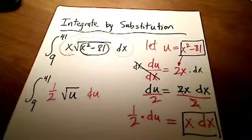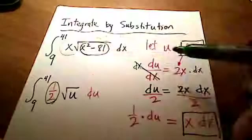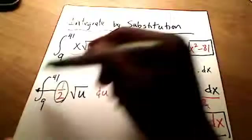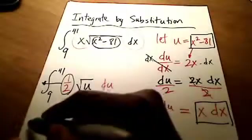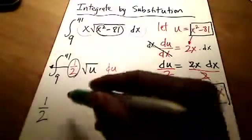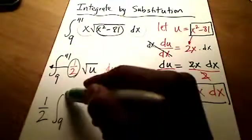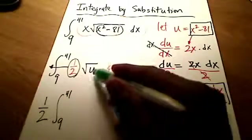But I'm writing it that way because I hope you see that I have a constant multiple of 1 half in this integrand. And if you haven't learned it by now, you can take any constant outside of an integral symbol just like this. You can write it like this: 1 half from 9 up to 41 of u, the square root of u du.